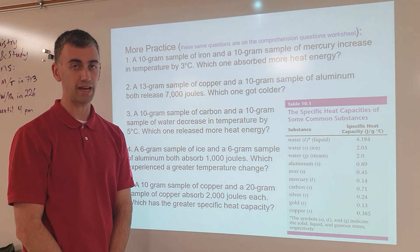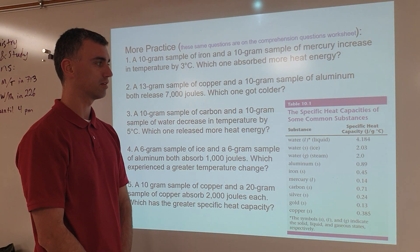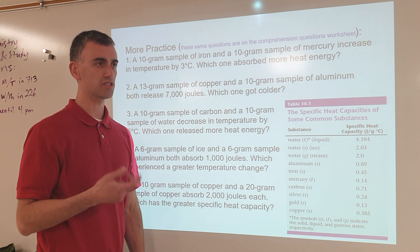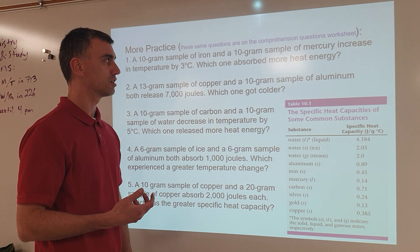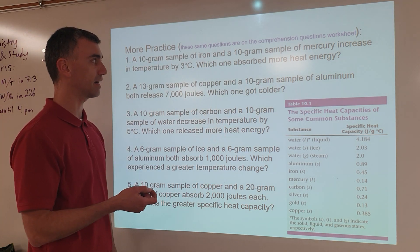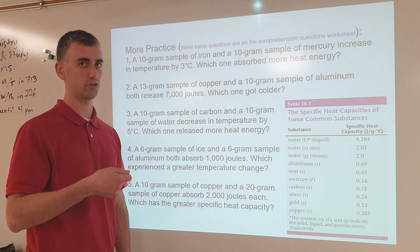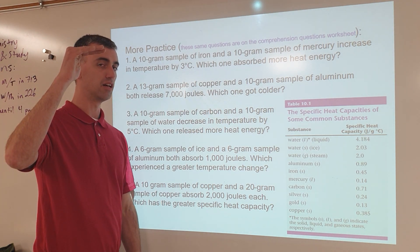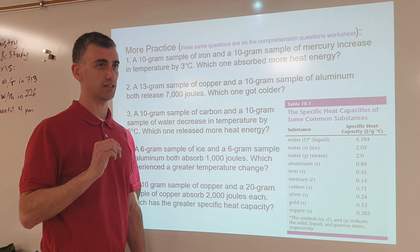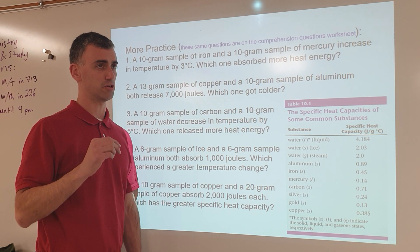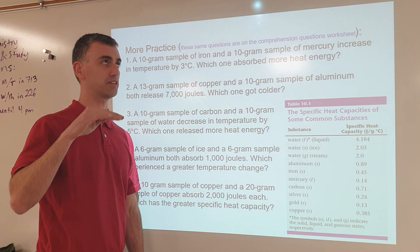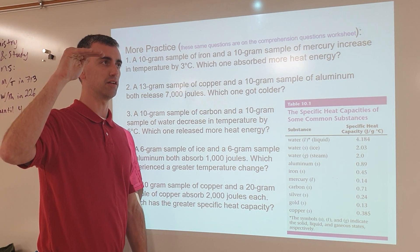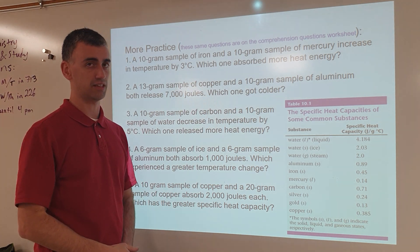To answer this, think of specific heat capacity as how many things something can hold — capacity means how much it can hold. So if something has a higher specific heat capacity, each degree Celsius holds more joules. It takes more joules to go up one degree Celsius. If it has a low specific heat capacity, it has low resistance to temperature change because it only takes a few joules to go up to the next degree Celsius, and a few more joules and it goes up another degree.